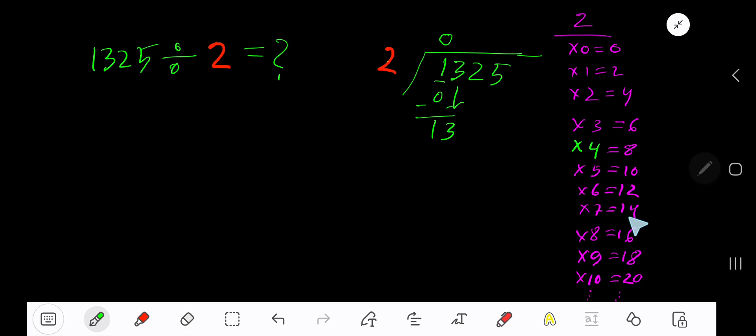Bring down the next digit. 2 goes into 12 how many times? 6 times. 6 times 2 is 12, subtract, 0. Bring down the next digit. 2 goes into 12 how many times? 2 goes into 12, 6 times. 6 times 2 is 12, subtract, 0. Bring down the next digit, 5.